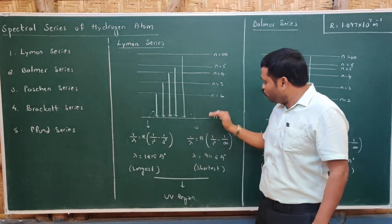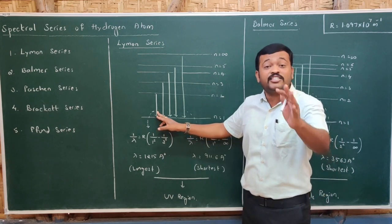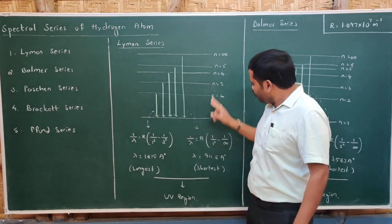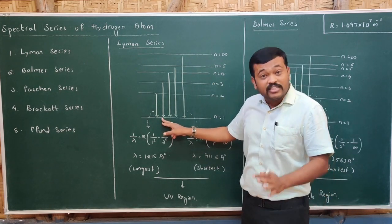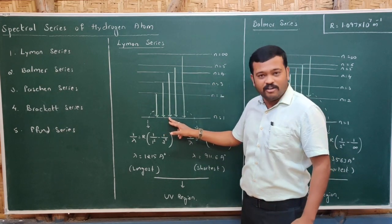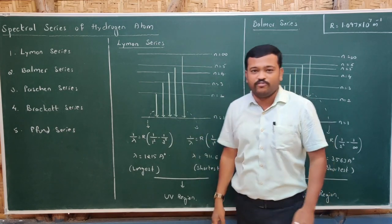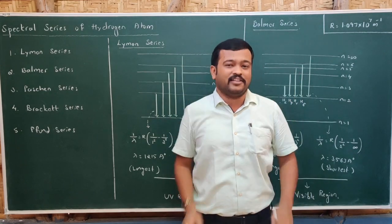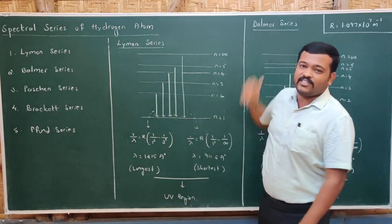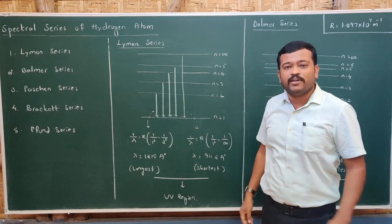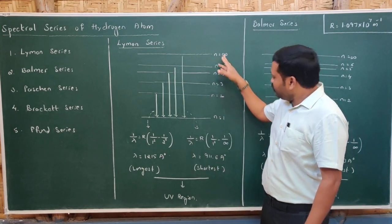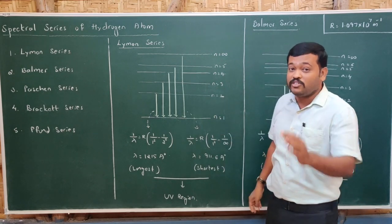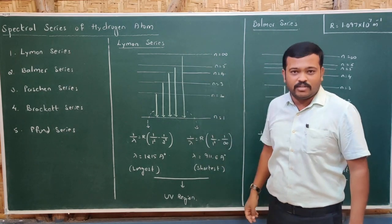The first transition takes place from n=2 to n=1 — this is the first member of the Lyman series. Transition from 3 to 1 is the second member; 5 to 1 is the fourth member. There are infinite members because there are infinite energy levels. The last member corresponds to the transition from infinity to n=1.